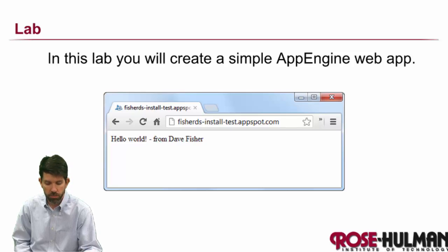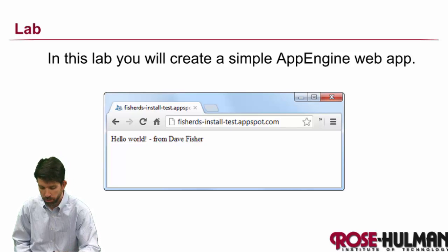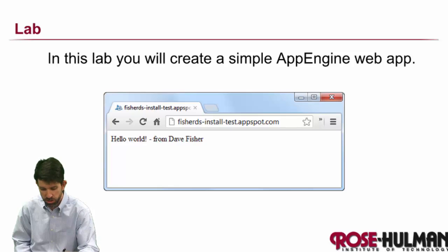Welcome back. In this lab, you're going to be creating a simple App Engine web app. We can see here that it is indeed very simple. You're going to be creating one that's just your name and install test, and that'll be at the default appspot.com.